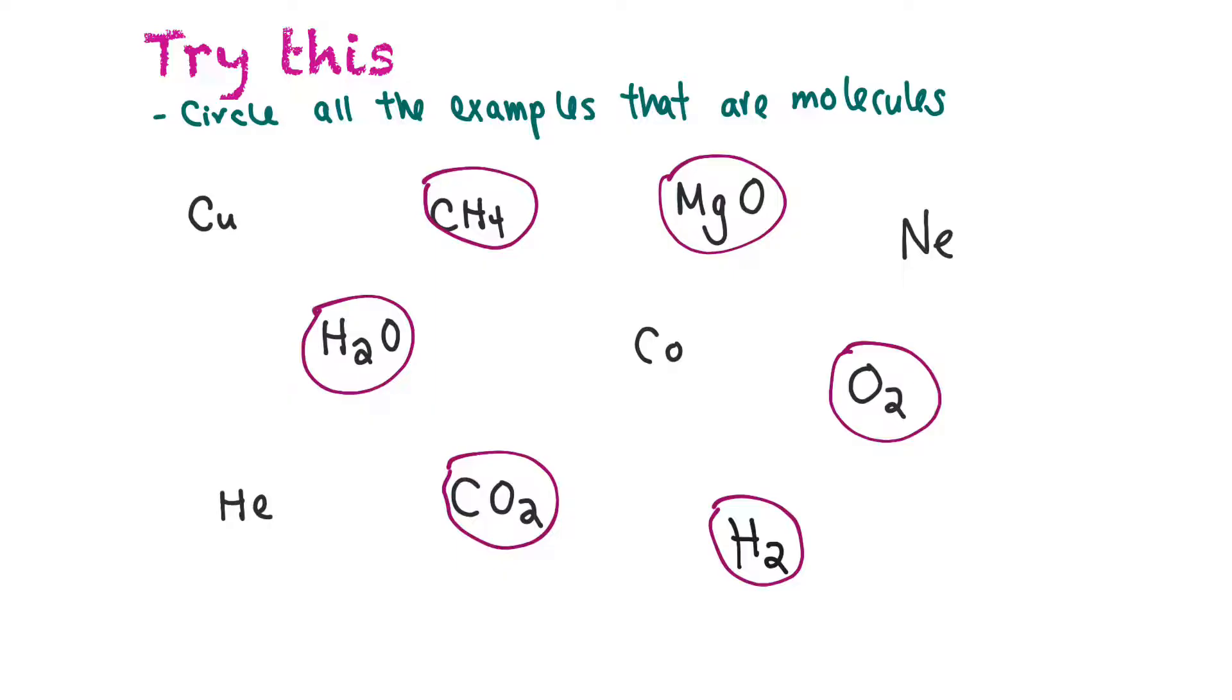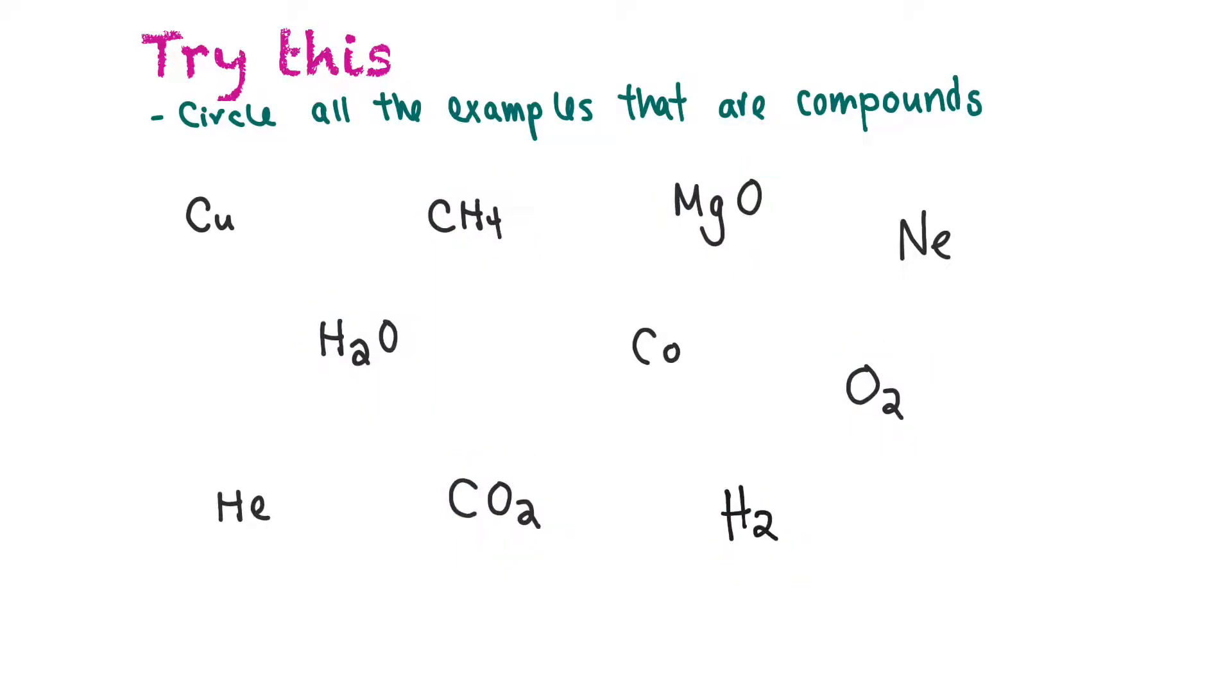Finally, we're asked to circle all the examples that are compounds. Compounds are when you have two or more elements joined together in a molecule. CH4, MgO, CO2, and H2O are all examples of compounds. But O2 and H2, they're molecules but not compounds because there's only one atom type.